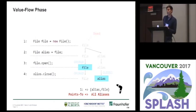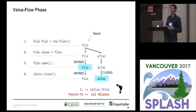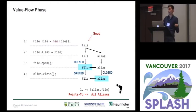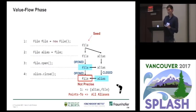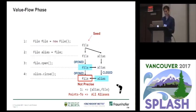What we would like to get is the result that both variables are allocated in line 1, and that both of them flow to alias and file. This is exactly what Boomerang gives us — a demand-driven pointer analysis that we published last year at ECOOP. If we have that information, we can go back to our graph and add edges, because after line 3, the variable file is the same as alias. If we trace the path along from the seed, we see that file is opened but also closed — so at least we are now complete.